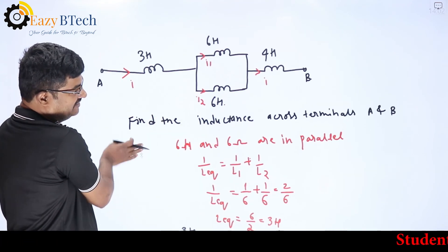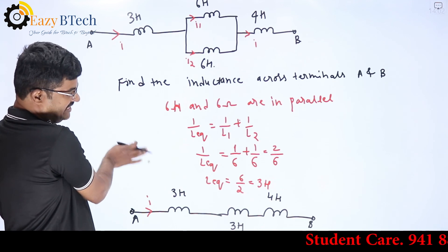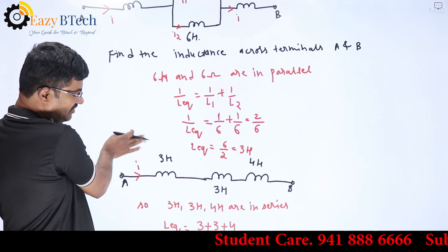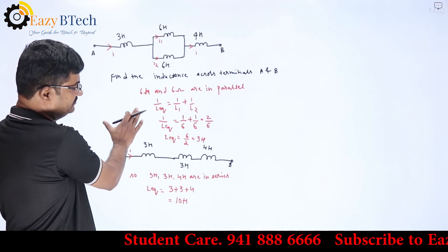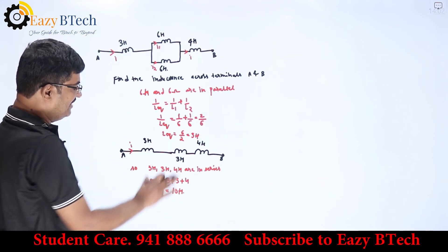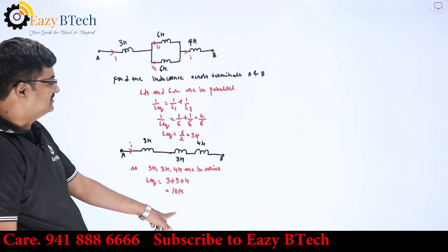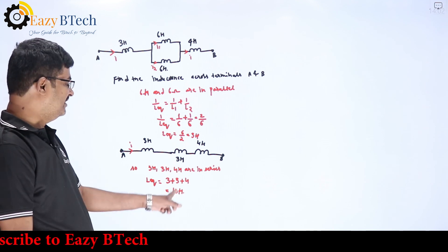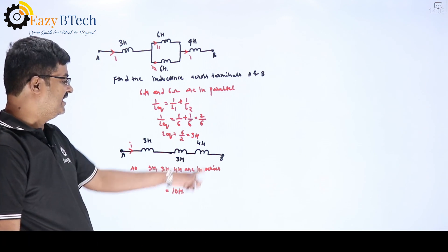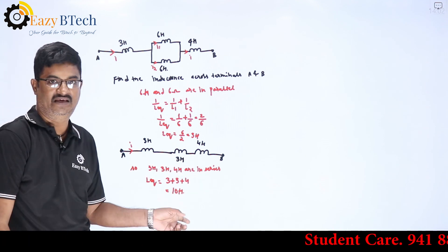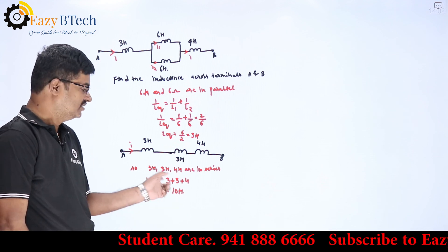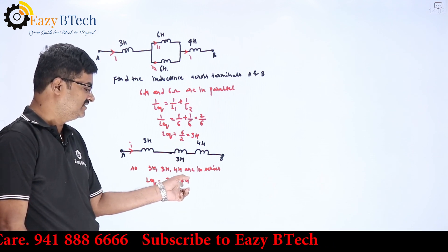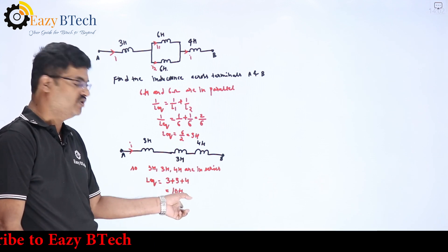This is how the current division is used and how we find the equivalent inductance across the terminals. L equivalent equals 3 plus 3 plus 4 — as they are in series, 3 plus 3 is 6, and 6 plus 4 is 10 Henry.